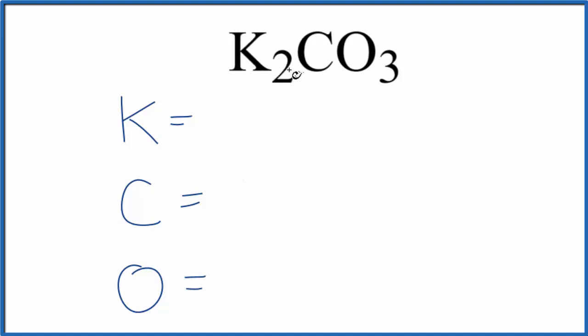So for the potassium, we have two atoms. Put a two there. But for the carbon, there's nothing written. So when we don't have a subscript here, we assume that to be one. So we have one carbon atom. For the oxygen, three.